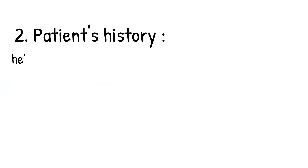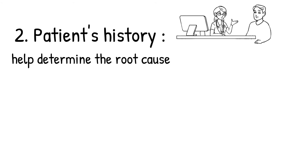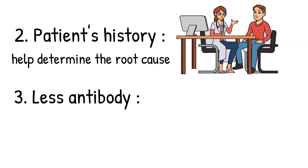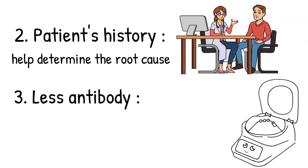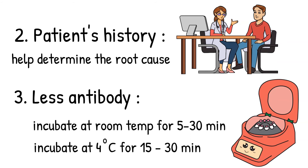Second, get to know your patient. Get the patient history, because that can help you determine the root cause of weak reactions or missing reactions in the reverse typing. Third, if the patient produces less antibody, you can allow time for the antigen and antibody to react to each other before centrifugation, by incubating for 15 to 30 minutes at room temperature. If that doesn't solve the problem, we can try incubating at 4 degrees Celsius for 15 to 30 minutes.